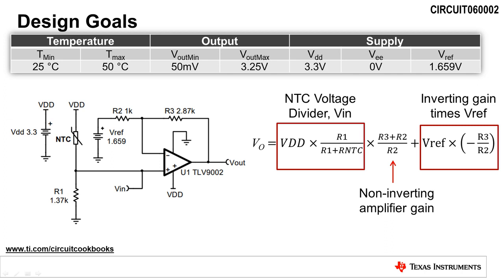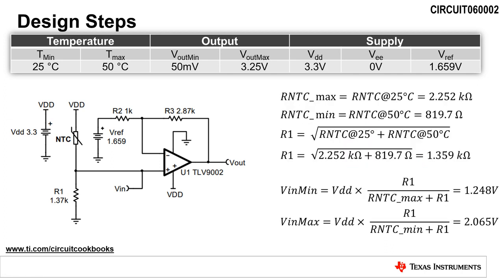The first goal for this circuit is to output a voltage of 3.25 volts at a maximum temperature of 50 degrees Celsius. This output voltage range from 50 millivolts to 3.25 volts will maximize the linear output voltage swing of the amplifier using a 3.3 volt single supply.